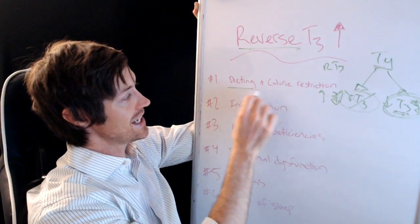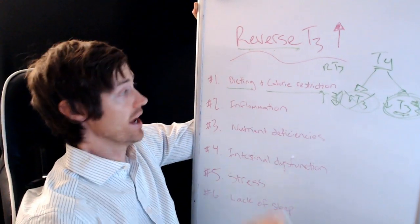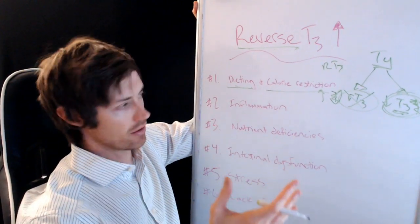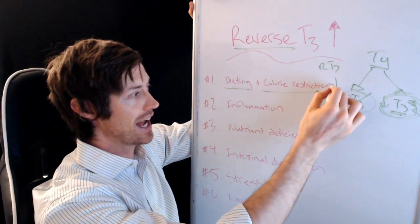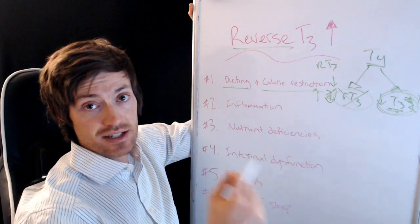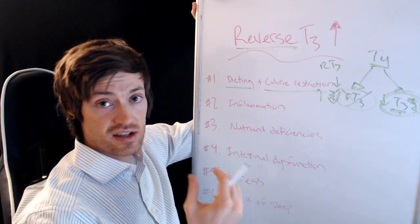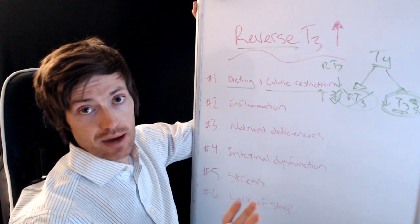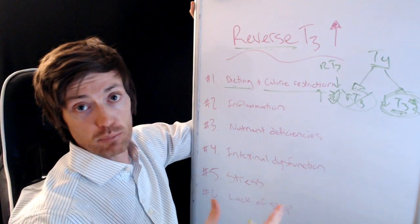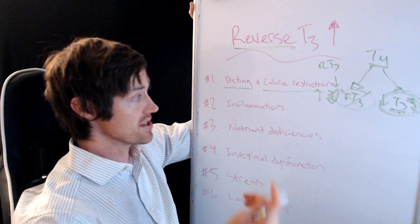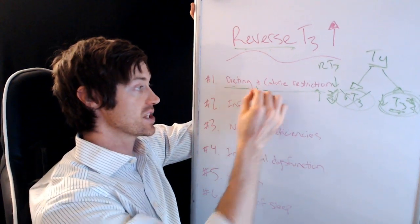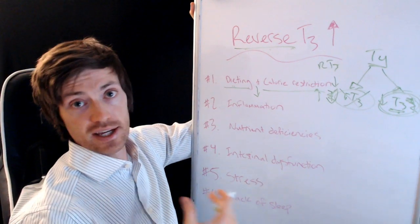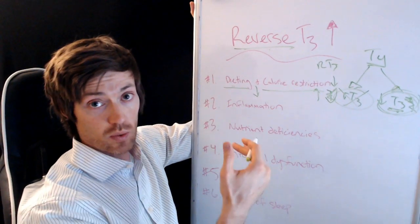Okay, so let's get to the topic, which is high levels of reverse T3. So the first one is dieting and calorie restriction. I'm not talking about eating the paleo diet or whatever. I'm talking about reducing the amount of calories that you consume on a day to day basis. What this does is it triggers something called metabolic adaptation. There have been many studies that prove this occurs. And what happens is as you reduce your calories, guess what happens to your metabolism? It drops as well.